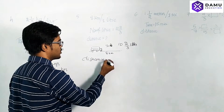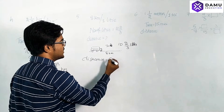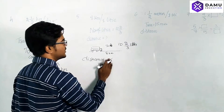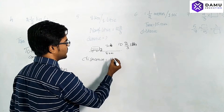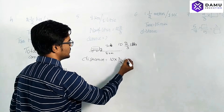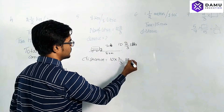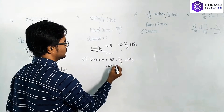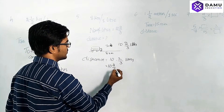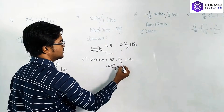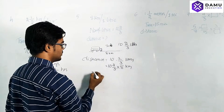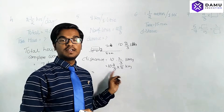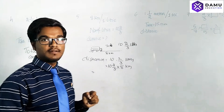With 10⅔ liters, how much distance can the truck travel? Distance will be equal to eight kilometers per one liter multiplied by 10⅔ liters. We will convert the mixed fraction into an improper fraction.